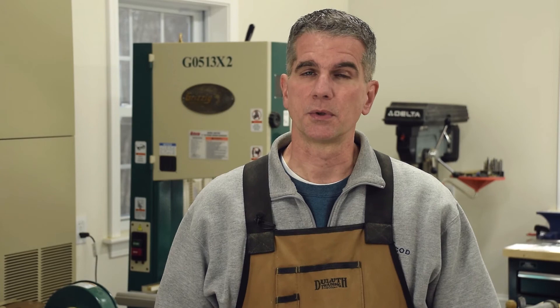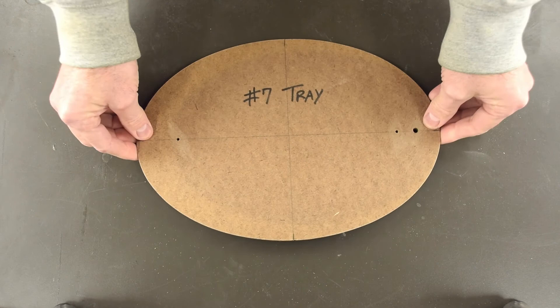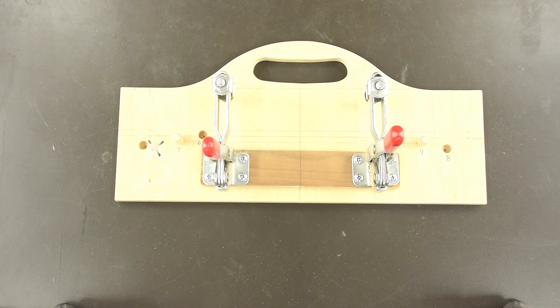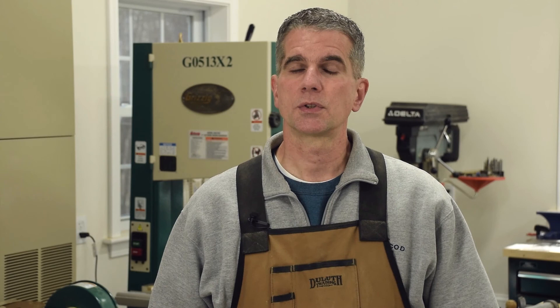And that will do it for all the tooling we need to produce our new number seven divided carrier. A solid form for bending and dryers to hold the band shape. Remember both of those are based on the same ellipse template, so that they're always a consistent size. The finger template and the handle template ensure accurate repeatability of components with maximum efficiency and throughput.